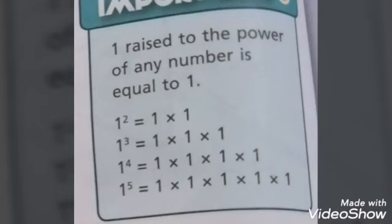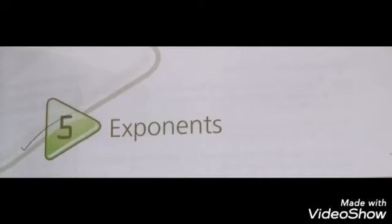1 square, 1 multiply by 1. 1 ki par jitne times ho ghi hai, muthne times us ko write kar dhe hai. For example, 2 ki par bhi ho sakti hai. Now, chapter number 3, chapter number 5: exponents.